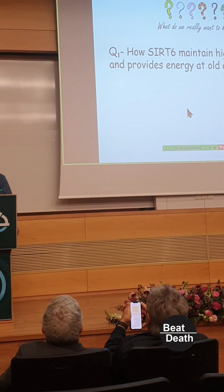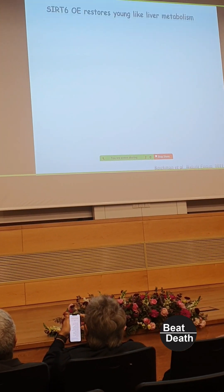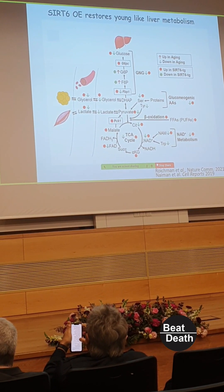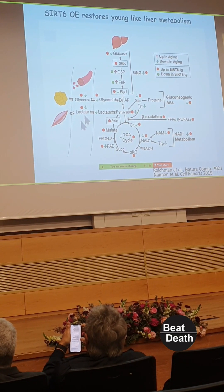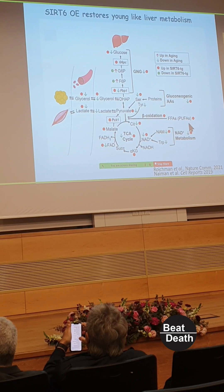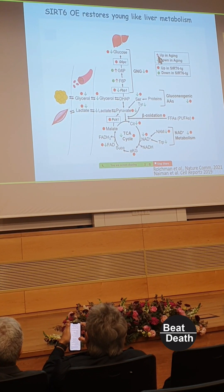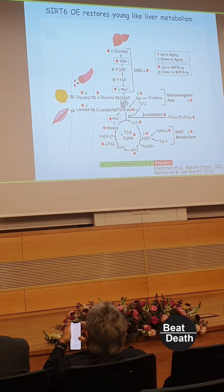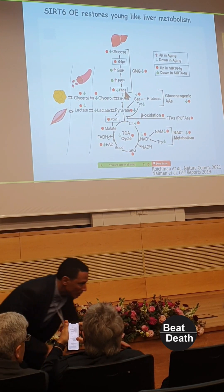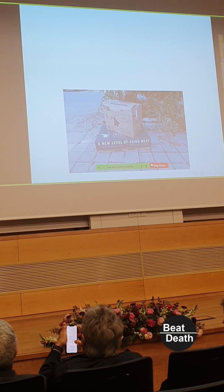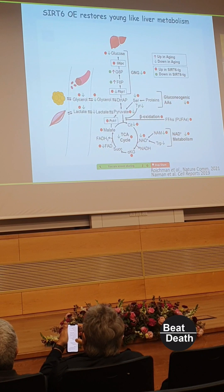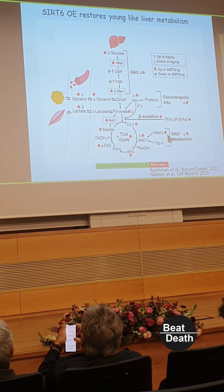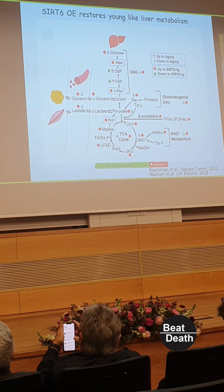We have several questions about how SIRT6 maintains higher activity at old age. To make a long story short, we performed metabolomics on old mice — the liver, blood, adipose tissue, and other tissues. In SIRT6 overexpression, you can see that aging-associated metabolic changes are essentially reversed to a young-like metabolic profile in the liver. Once you reverse metabolism to a young-like state, you can produce enough energy to remain active even at old age.